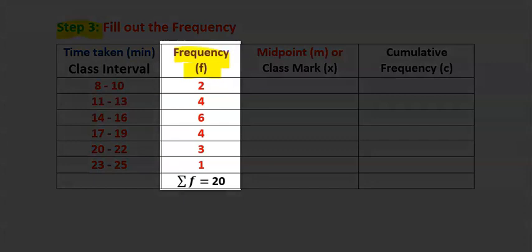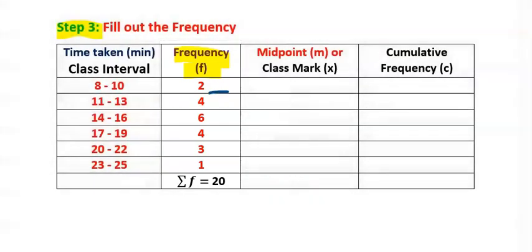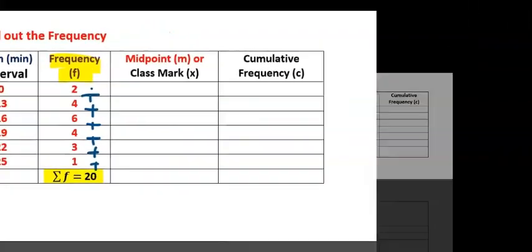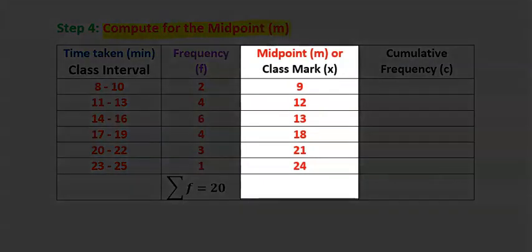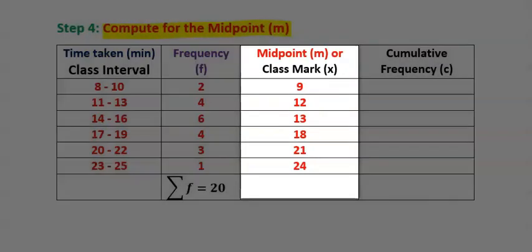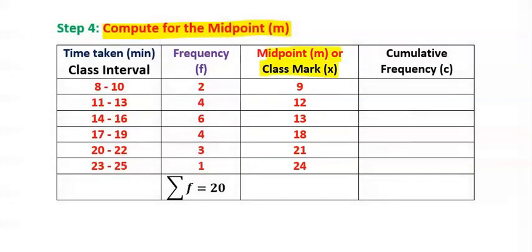After filling out the frequency, next, add up all the frequencies. Here we got a total of 20, which is the size of the sample. Next, compute for the midpoint, which is also the class mark.